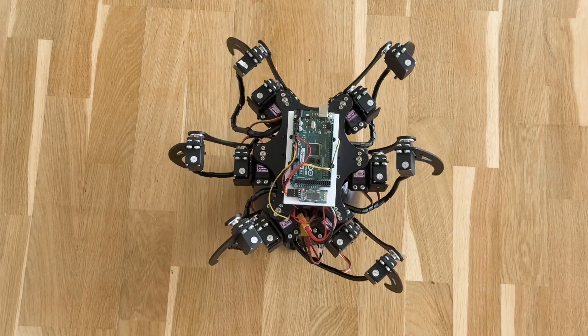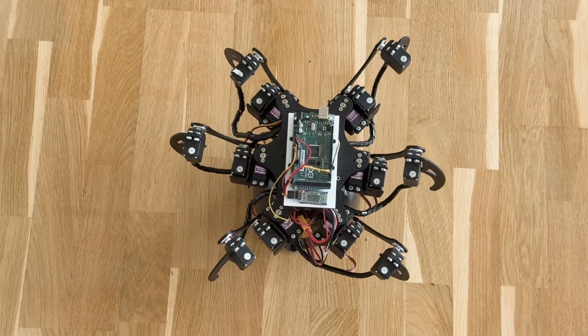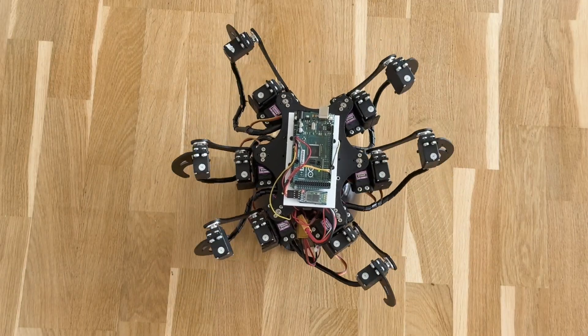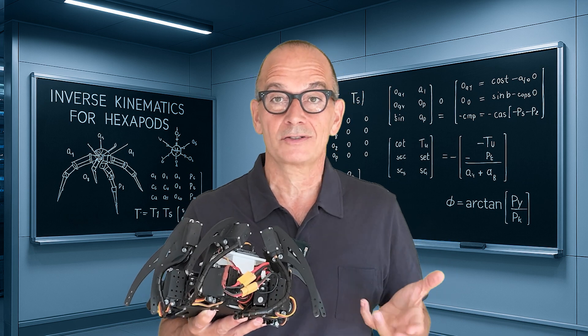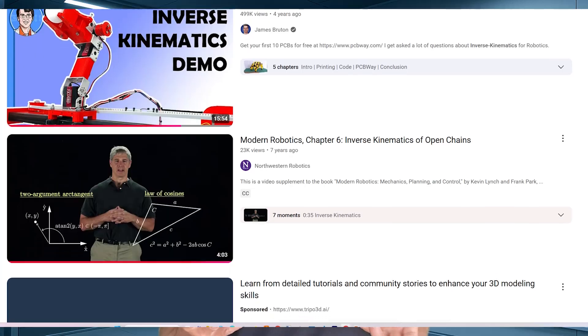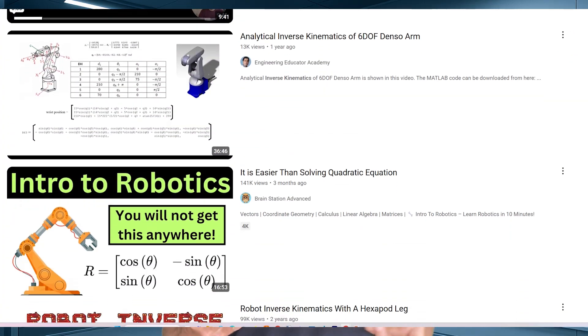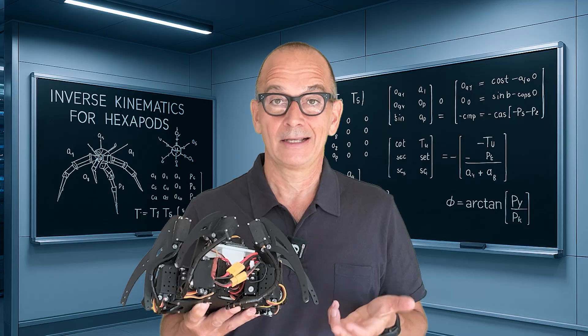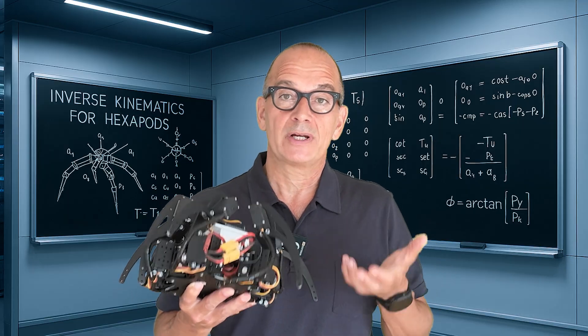Sure you could animate each of the servos one by one, but trust me it's really slow, painful, and almost impossible to get right. After hours of digging through YouTube videos and articles I realized inverse kinematics was the best answer, but most tutorials I found were either too complicated, too vague, or only explained a single leg. So in this video I'm making the guide I really wish existed when I started on my own.